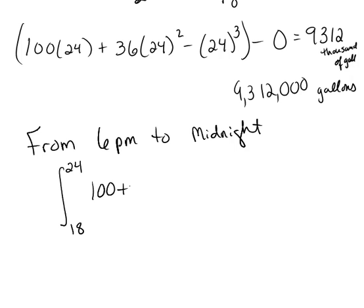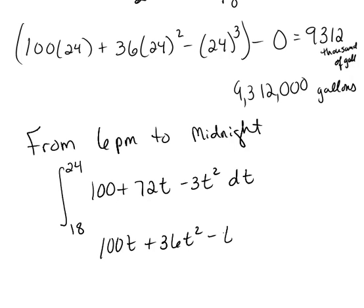So that took a little bit of thinking, and so we can just compute this. And this one's a little bit trickier because you're going to have your f(b) minus f(a). This is still 100t, and this is plus 36t² minus, this is just t³.